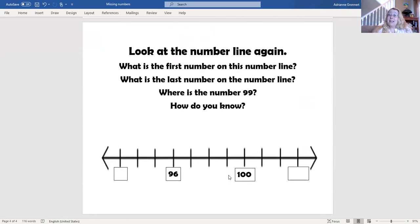Look at the number line again. What is the first number on this number line? Let's see. I think I need to count backwards again. I see the number 96. So I need to count backwards. 96 is 95, 94, 93. So this must be the number 93. Excellent.